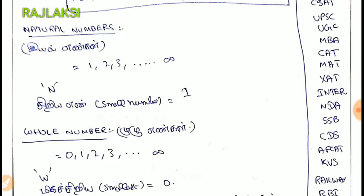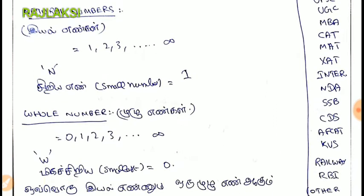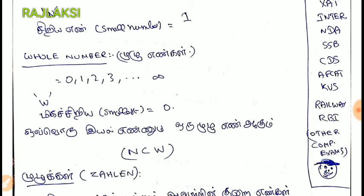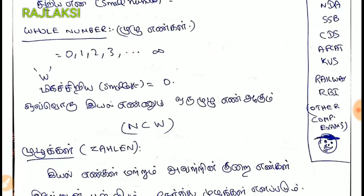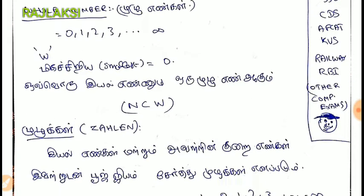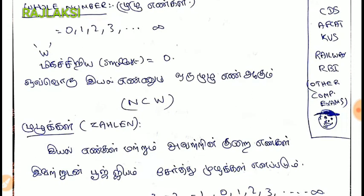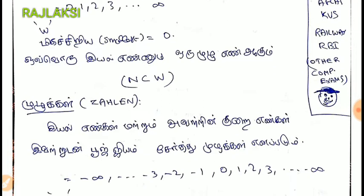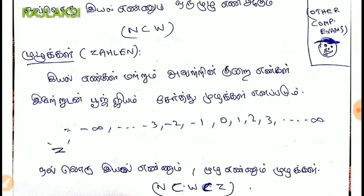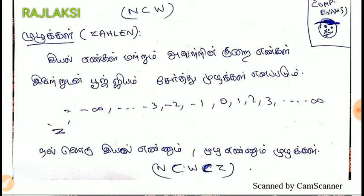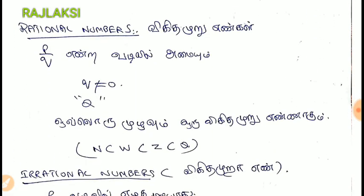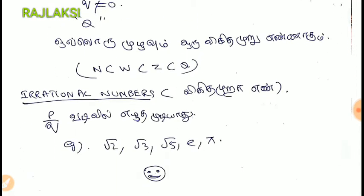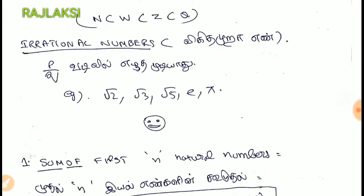There is 1 to 3 — you can call these small numbers. Here is the p/q formula where q is not equal to 0. You can call it root and pi values — irrational numbers. You can call it a decimal point.